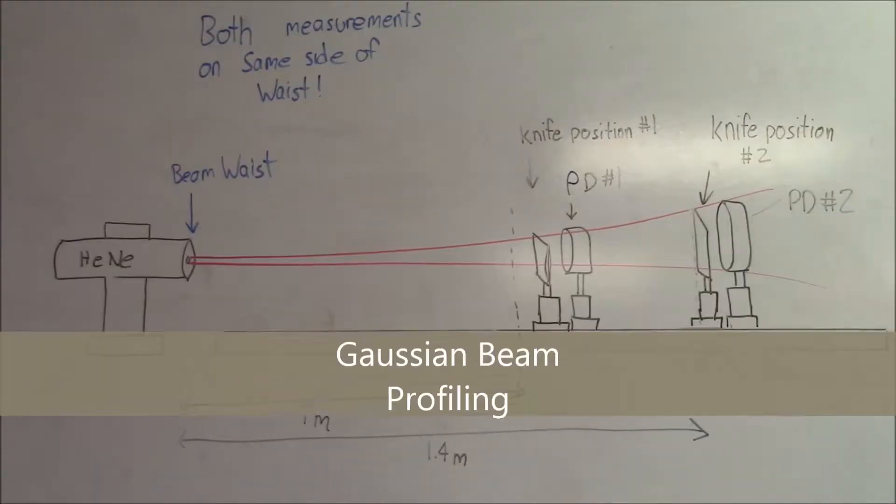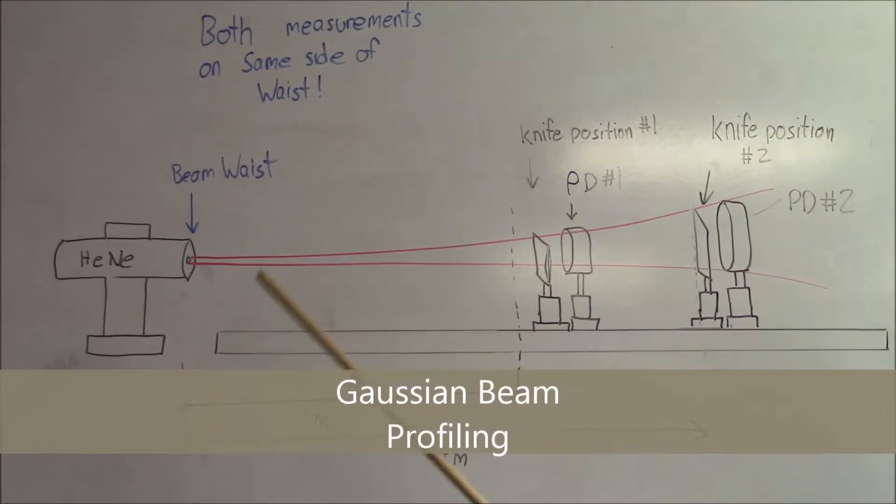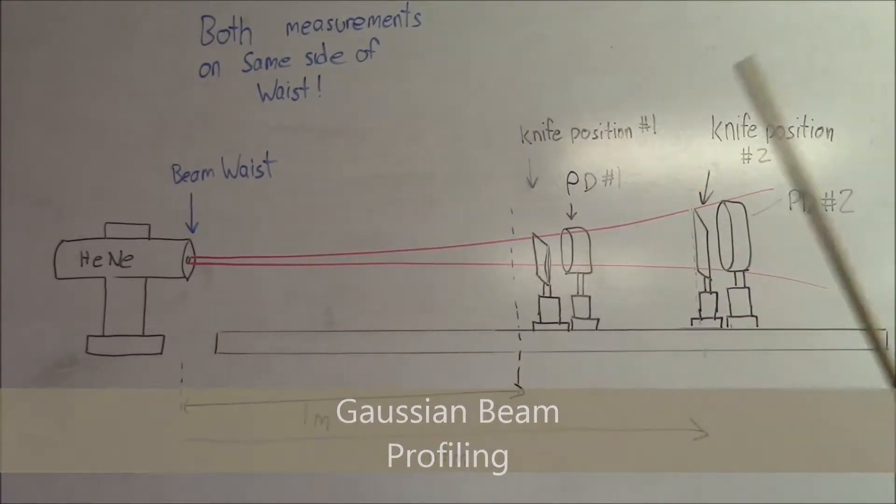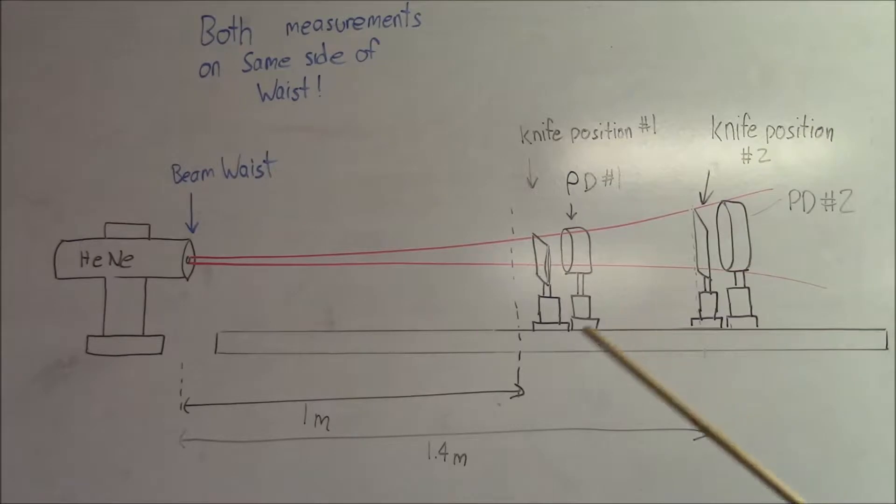We have a diverging Gaussian beam from this laser right here. And we placed the knife at two different positions, 1 meter and 1.4 meters away from the laser with the photo detector right behind it. And we translated the knife through the beam and plotted the results. As you can see here, the beam waist is more or less at the aperture of the laser. And both knife positions were behind the beam waist.